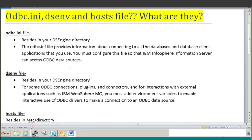Now moving to the dsenv file, that is your DS environment file. It again resides in your DSEngine directory. In every other video I am telling you about sourcing this dsenv file. So basically when we source that dsenv file, whatever parameters or environment variables are present inside this file are exported to your data source server, which will be used for further processing of your tools. For some ODBC connections, logins, and connectors, and for interaction with external applications such as IBM WebSphere MQ, you must add environment variables to enable interactive use of ODBC drivers to make a connection to your ODBC data source.